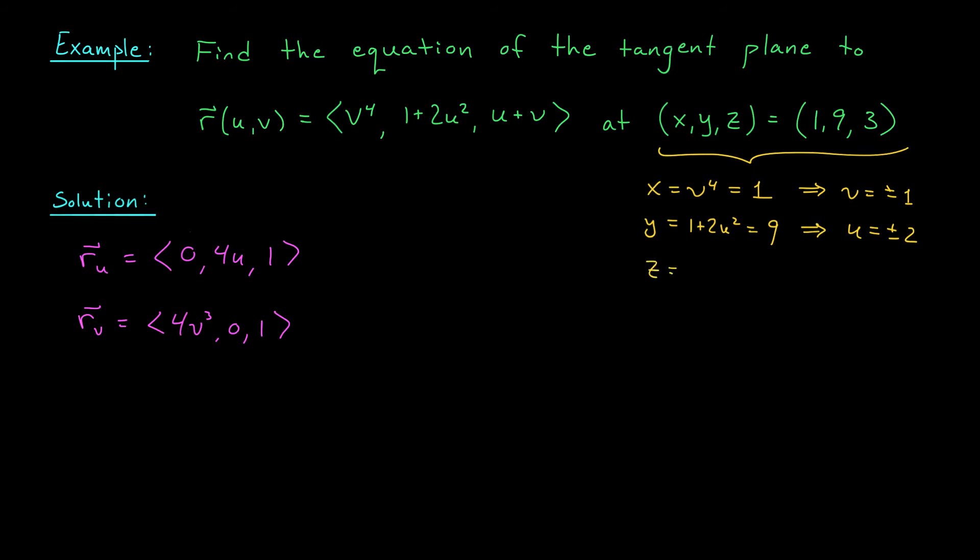Based on the last equation, we know that u and v must sum to three. And therefore, from our earlier values, we see there's really only one possibility. u is two, v is one. So we're going to be evaluating these derivatives at the point two, one.